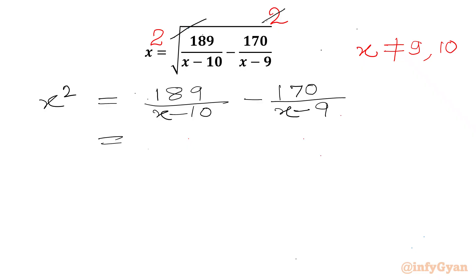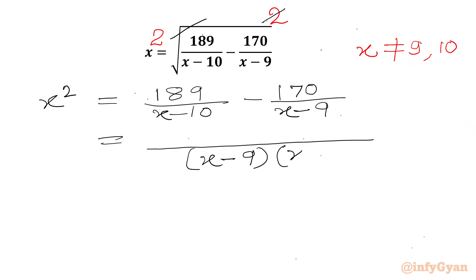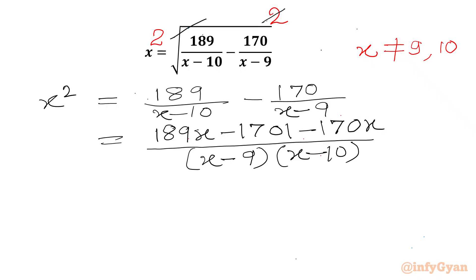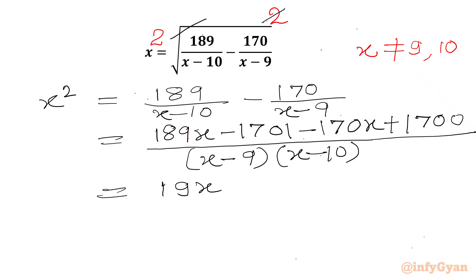Now we can take LCM. So in the denominator we will write the product of (x minus 9) times (x minus 10). In the numerator we will get 189x minus 1701 minus 170x plus 1700. Now we can simplify the numerator: 189 minus 170 gives 19x, and minus 1701 plus 1700 gives minus 1. So the result is (19x minus 1) over (x minus 9)(x minus 10).